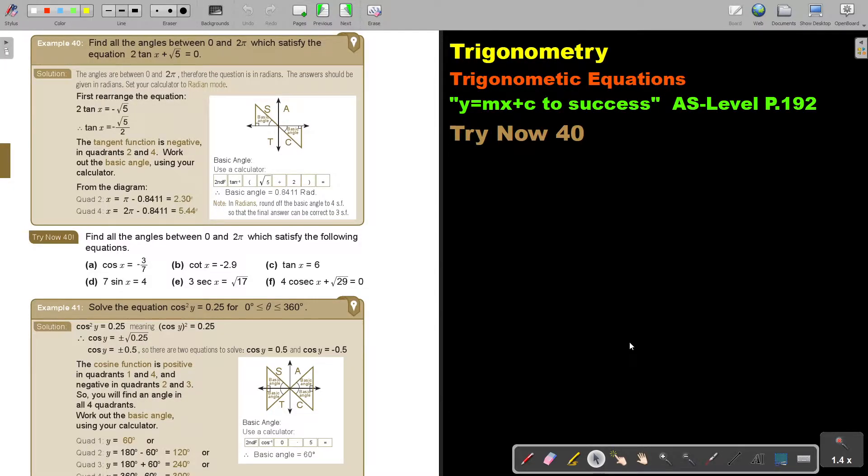In this video, we are going to continue with trigonometric equations. You will find this on page 192 in the Namibia AS level mathematics textbook, y equals mx plus c to success.